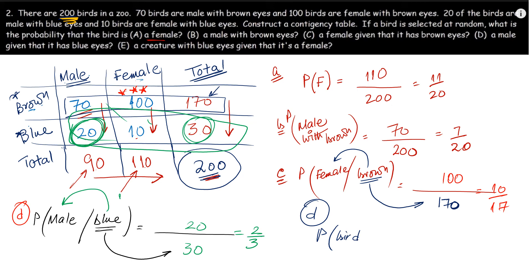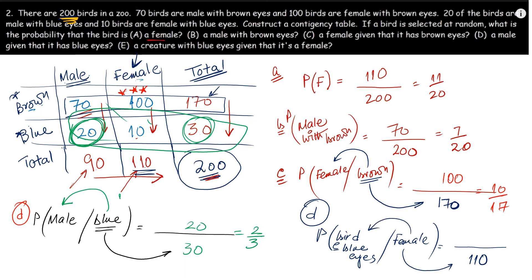The last part: probability that a bird has blue eyes, given it is female. The given condition (female) goes in the denominator: 110 total females. Of those, 10 have blue eyes. So 10/110 = 1/11 is the probability. Rewind and try solving the questions yourself if the concept needs reinforcement.